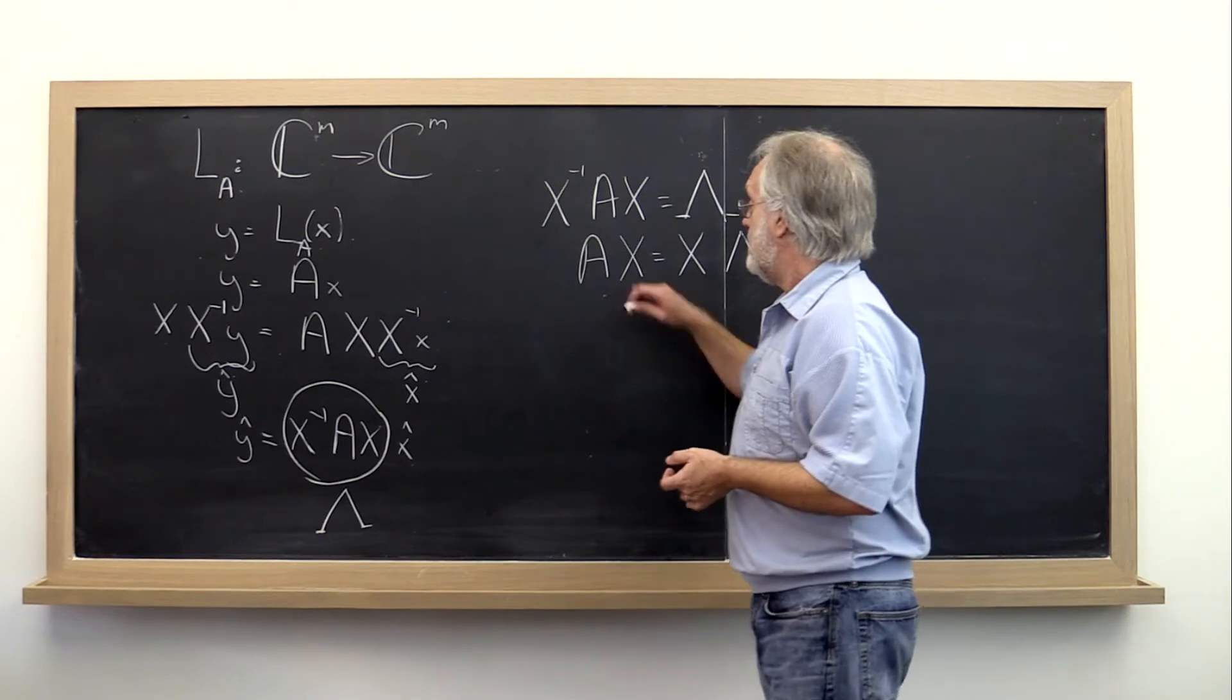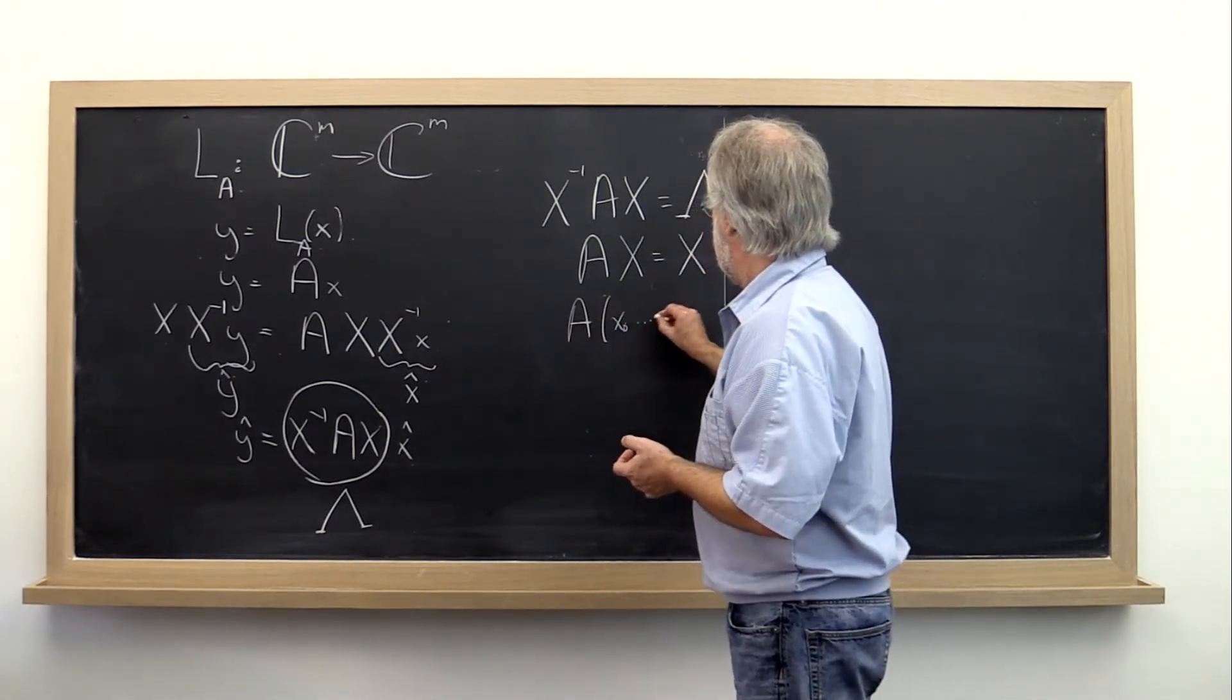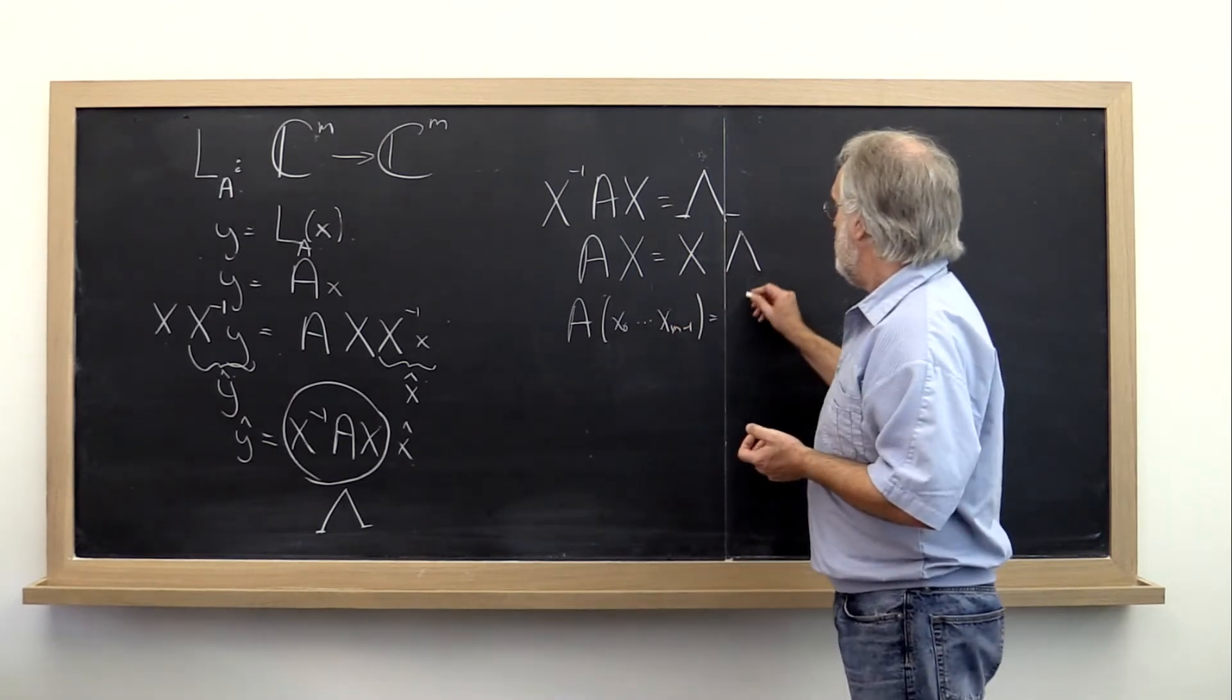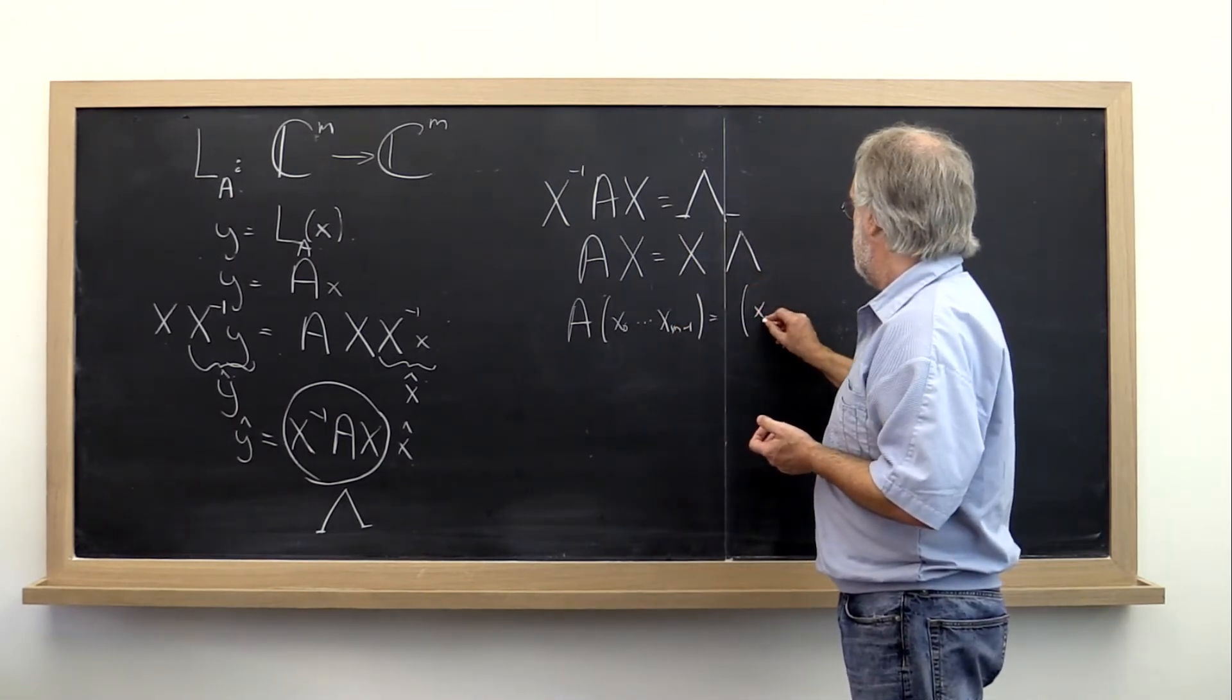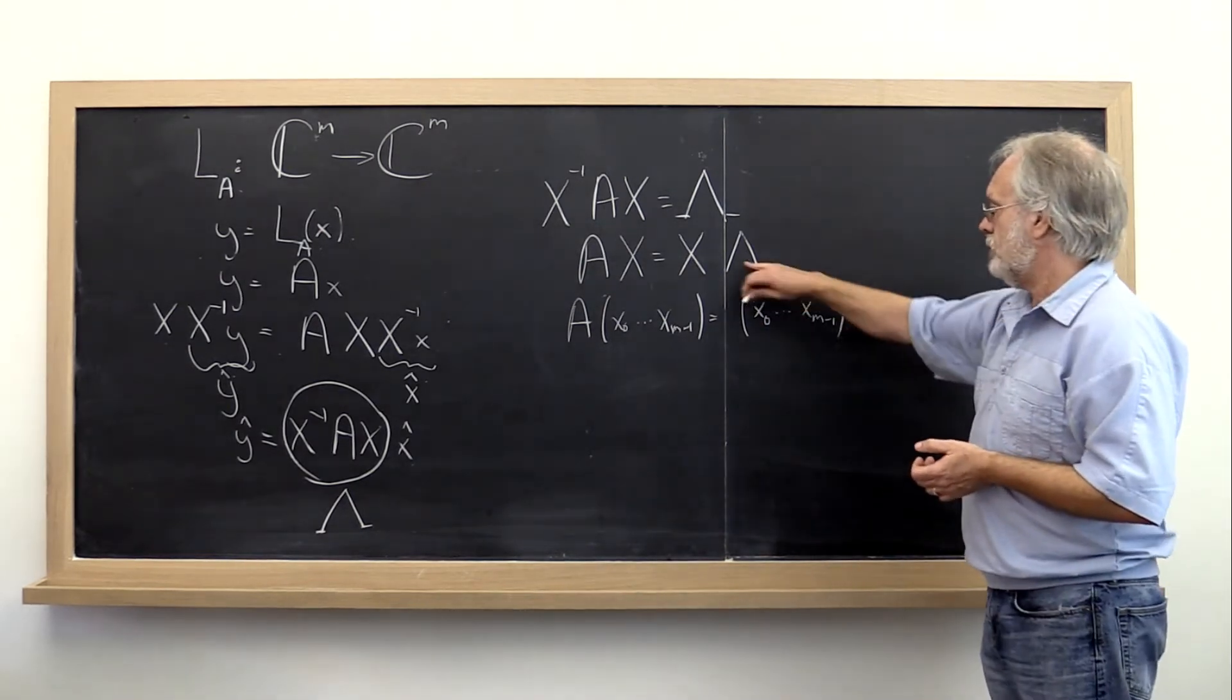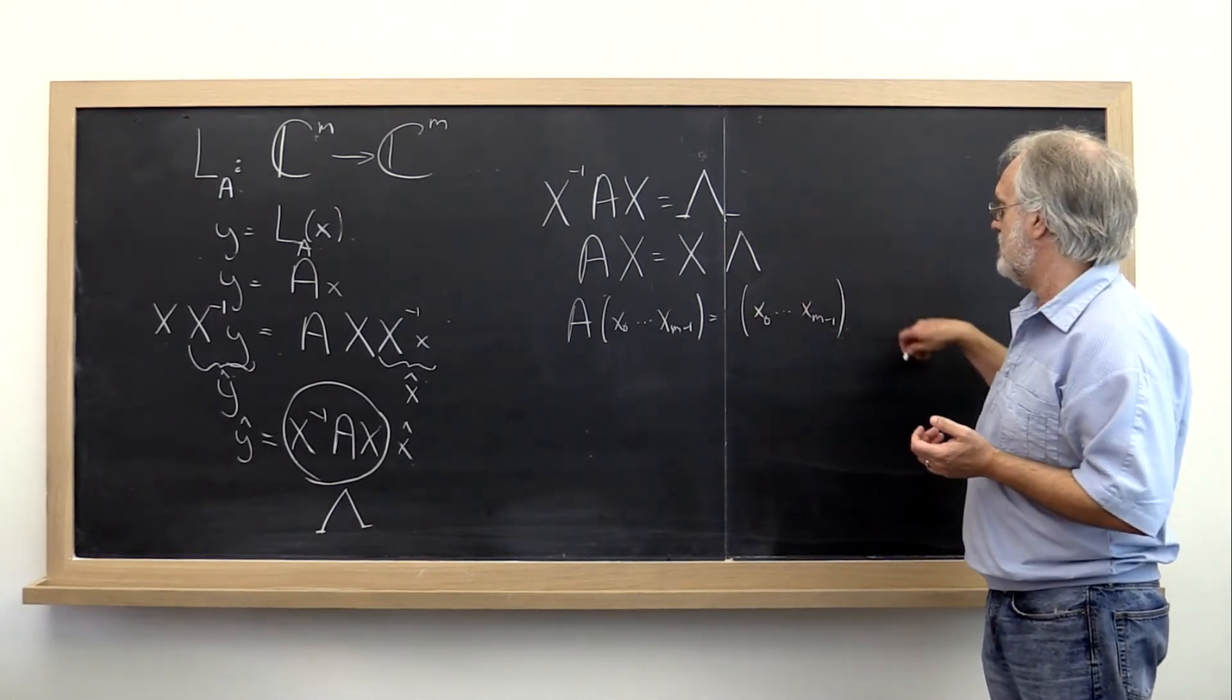So let's take our X and let's partition it into its columns. And let's do this on both sides. But notice two things. We need to do something with lambda because we need to be able to do this times that plus this times that, etc.